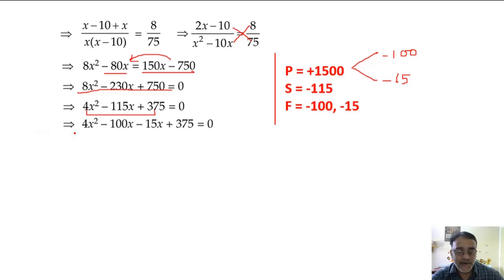We are going to split minus 115x to minus 100x minus 15x. What is common between these two? 2x. And what is common in these two? 4x is common in this, and 15 is common in this - minus 15. If you take 4x common, we will get x minus 25. If you take minus 15 common, here also we will get x minus 25.